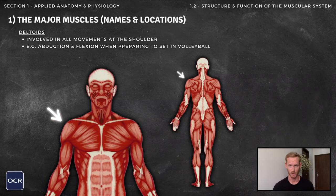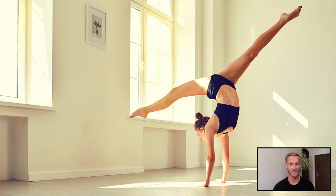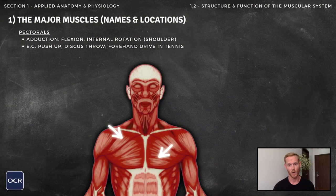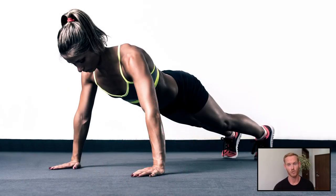The deltoids are the shoulder muscles that are involved in all movements at the arms: flexion, extension, rotation, abduction, adduction, and circumduction. The deltoids raise the arms out to the side and upwards when setting in volleyball, and allow gymnasts to perform a handstand. The pectorals are comprised of two sets of muscles, the larger pectoralis major and smaller pectoralis minor. They create adduction and flexion at the shoulder joint, but also assist with internal or medial rotation. For example, the pectorals draw the arm towards the body during the upward phase of a push-up.